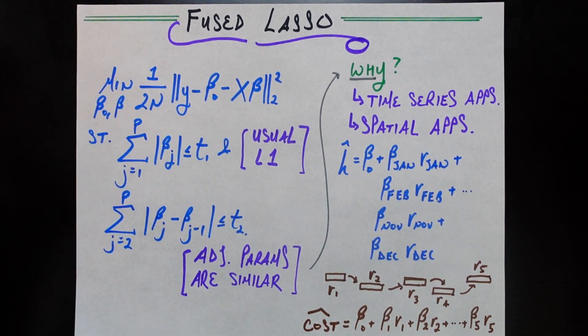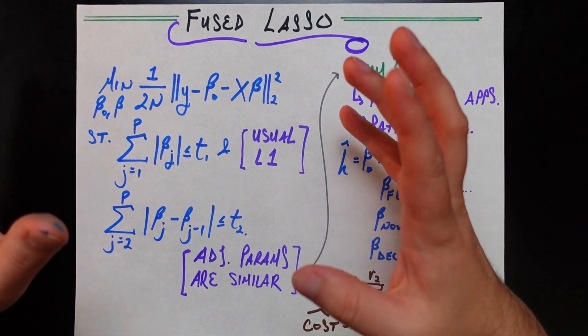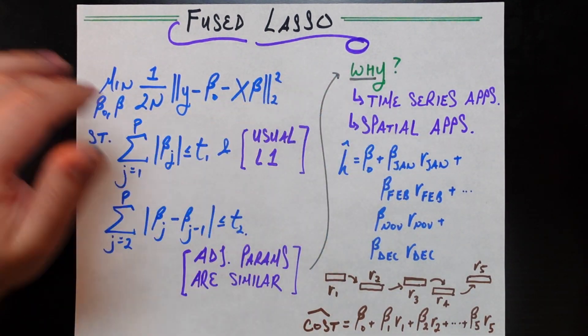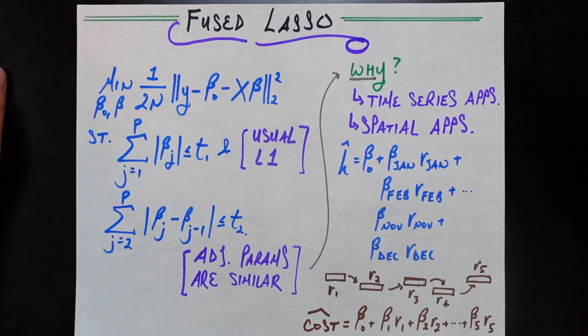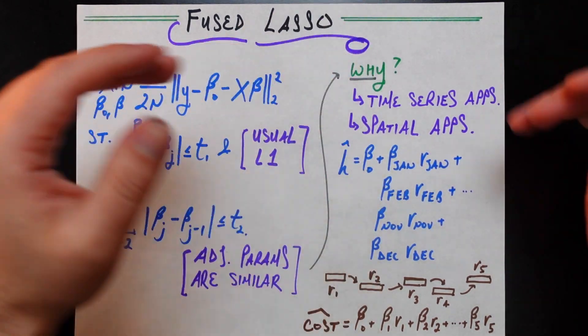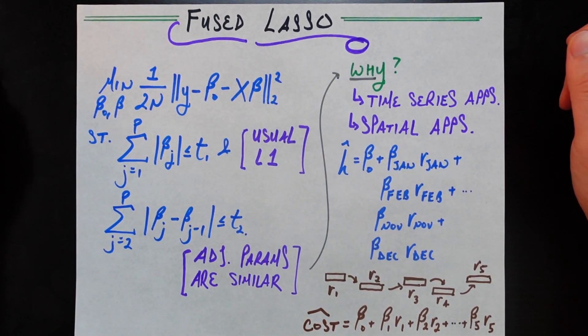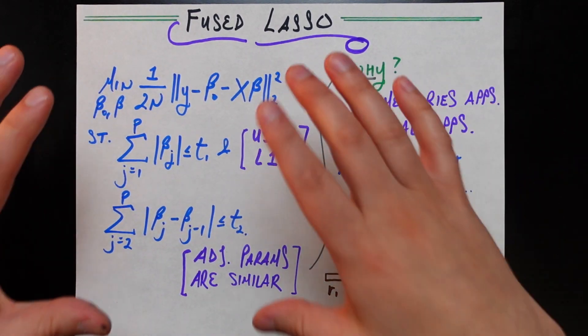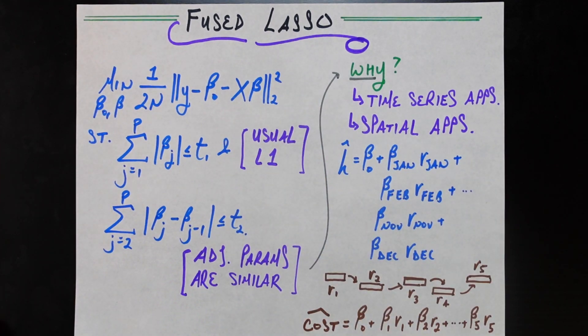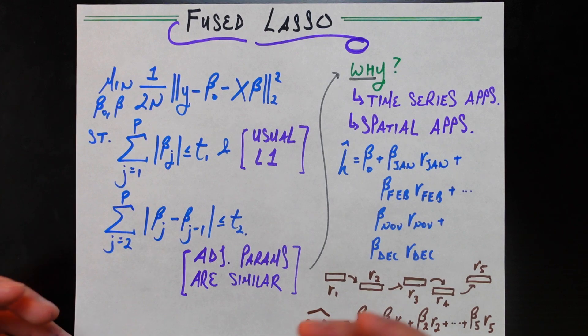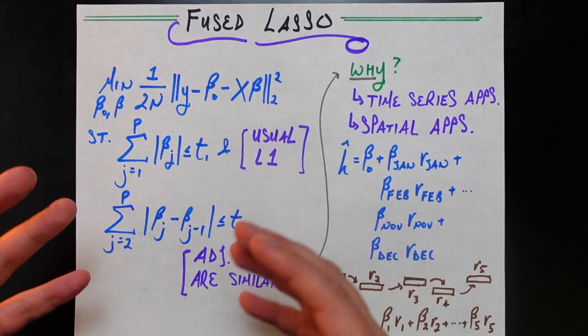Besides just having a really badass name, I think this is a really useful form of lasso, especially as we'll see when it comes to time series application and spatial statistical applications. But we'll get to the why in a second. I actually want to start with the mathematical form of fused lasso, contrary to what we usually do on this channel. But looking at that mathematical form is going to give rise to, hey, when would such a mathematical form, what types of problems would such a mathematical form be helpful in trying to solve?